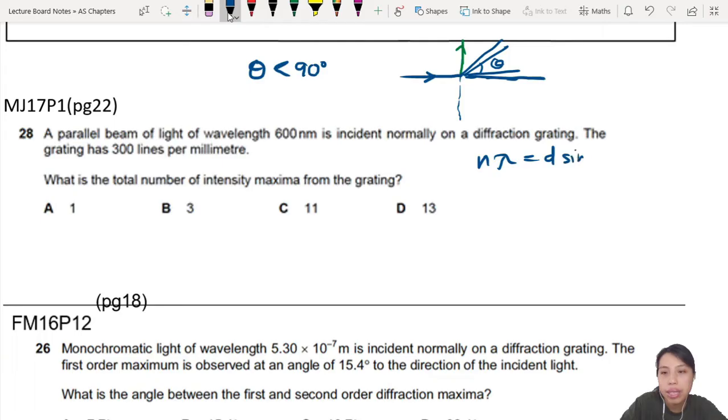equation: n*lambda = d*sin(theta). We know that theta has to be less than 90 degrees, whatever your n number is. When you find the maximum n number, sine 90 is 1, so n equals d over lambda.